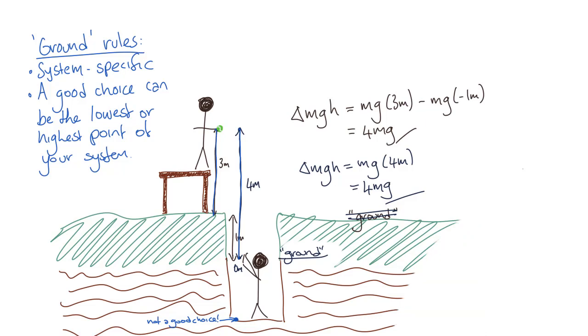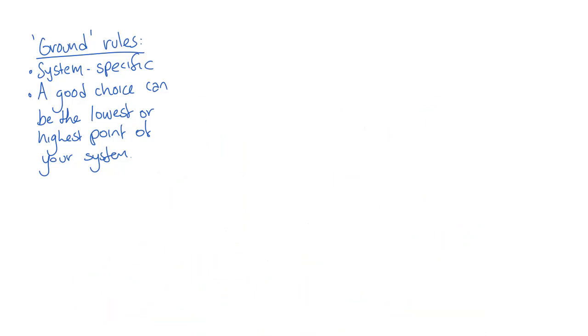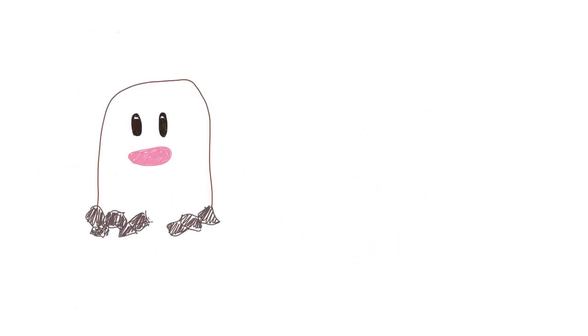Whereas setting our zero in the hole gave us very nice, simple numbers. So why have I called this concept ground? Well, the physical ground is a natural reference point in equations, particularly in potential energy, because it's usually the surface that things drop to.